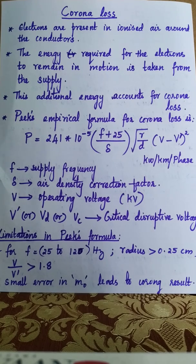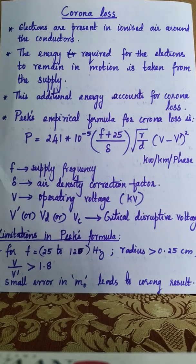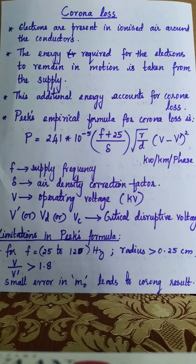Here, f is the supply frequency, δ is the air density correction factor, V is the operating voltage in kilovolt, and V' (also denoted Vd or Vc) is the critical disruptive voltage. The energy taken by free electrons from the supply system to maintain motion and strike other air molecules to produce an avalanche of free electrons is called corona loss.